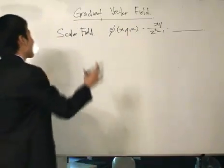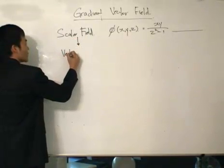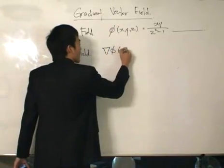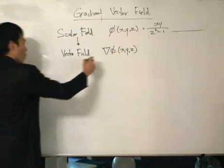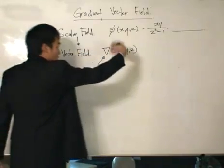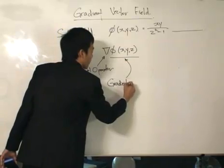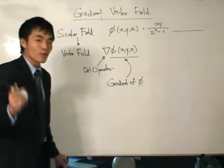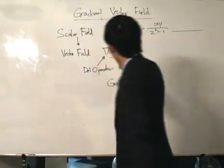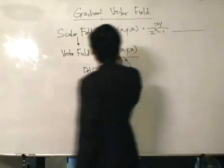The people who invented this section of calculus thought of a way to go from a scalar field to what we now know as a vector field. That is done by what we call del. We write del phi of x, y, and z — this is called the del operator. The del operator will give us a vector field, and this particular vector field we like to call the gradient field of phi.